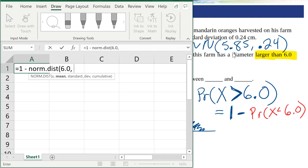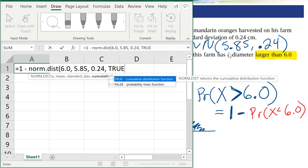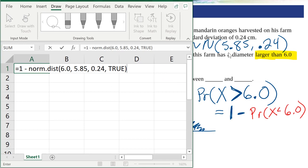X is that 6.0, the mean is that 5.85, the standard deviation is 0.24, and cumulative you always say true. Then press enter.